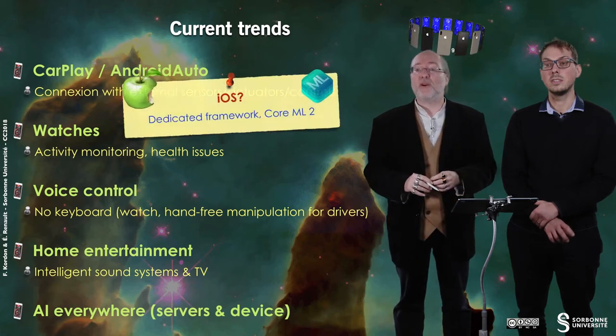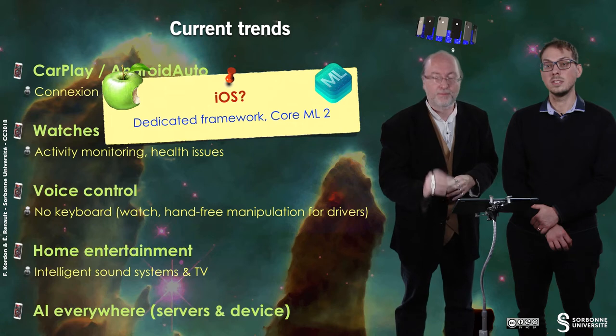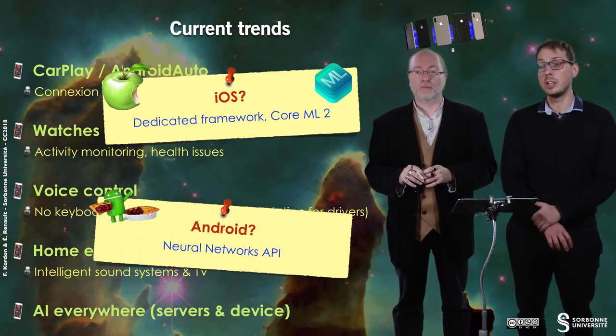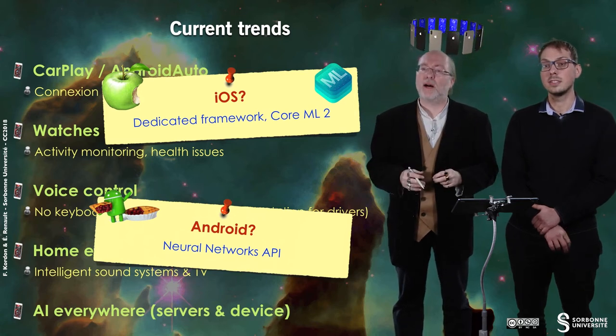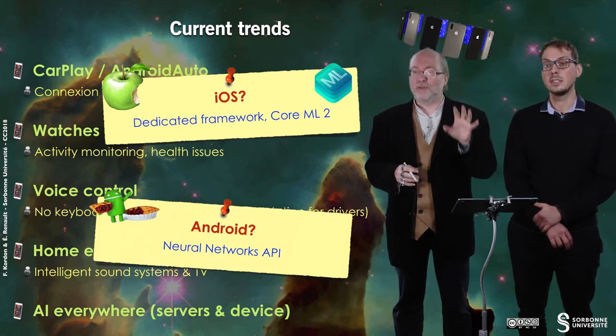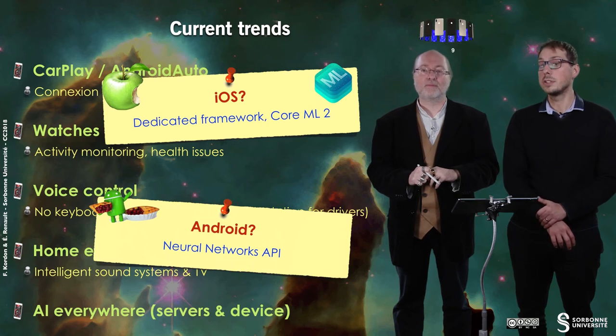More recently, home entertainment is arriving with sound systems you can control by voice and with TV — many TVs embed Android or iOS for Apple TV. A last trend is artificial intelligence everywhere, on servers but also on devices. On iOS, you have a dedicated framework for machine learning called Core ML (now in its second version). For Android, you can use the Neural Network API, which runs Google's latest neural network libraries. Each of these companies, and also others like Amazon, probably own the largest communities of researchers in artificial intelligence. Amazon is also making its market share with home entertainment via Alexa.